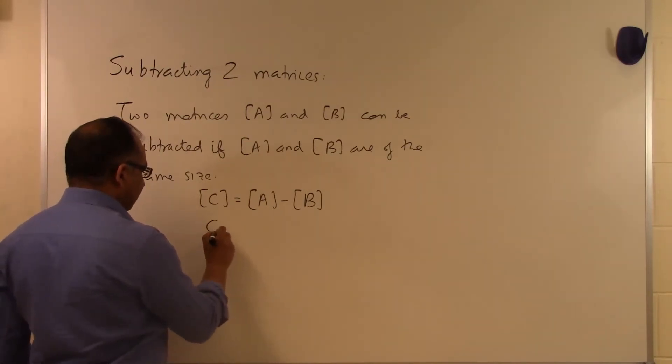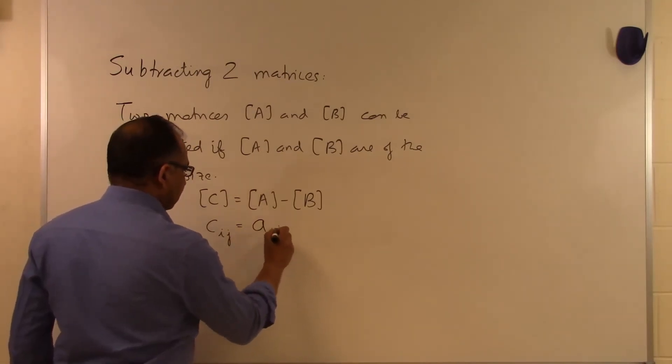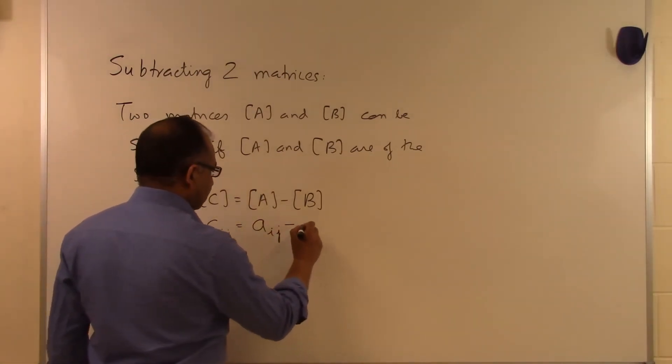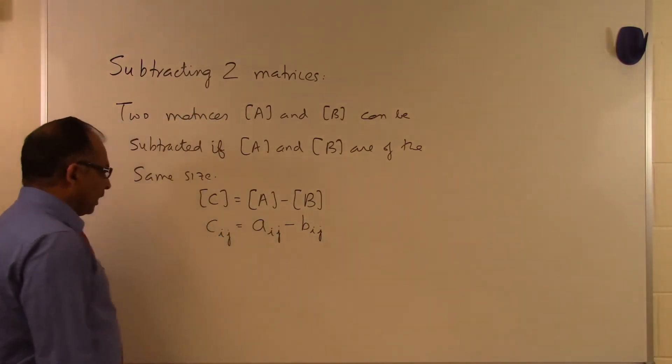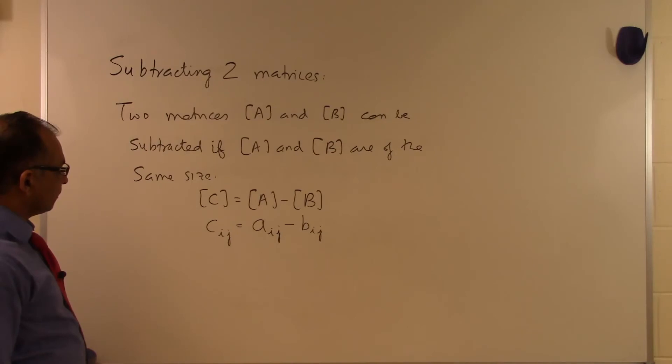In order to find out each of the elements, the ijth element of C, I will take the ijth element of A and I will subtract from it the ijth element of B. And that's how I will get the element in the C matrix.